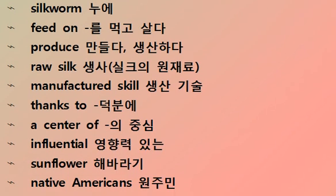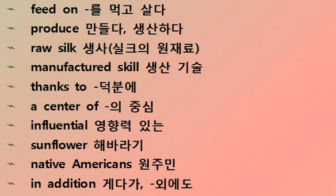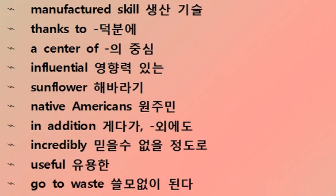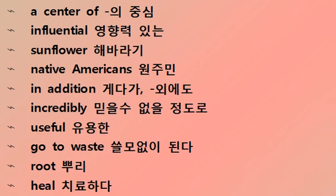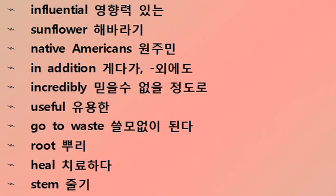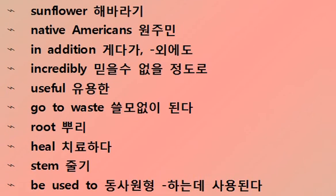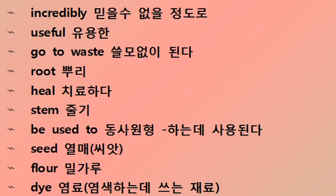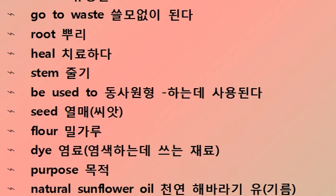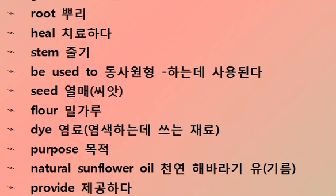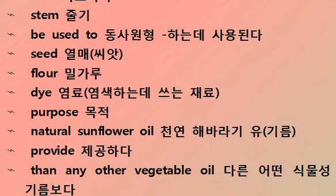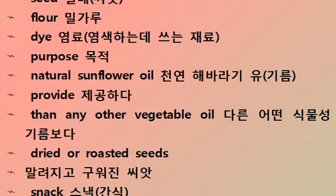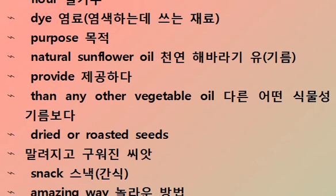Raw silk was manufactured with great skill, making the region a center of influence. The sunflower — Native Americans found it incredibly useful with nothing going to waste. The root was used to heal, the stem for various purposes, seeds and flowers as dye. Natural sunflower oil provides more than any other vegetable oil. Dried or roasted seeds served as a snack.